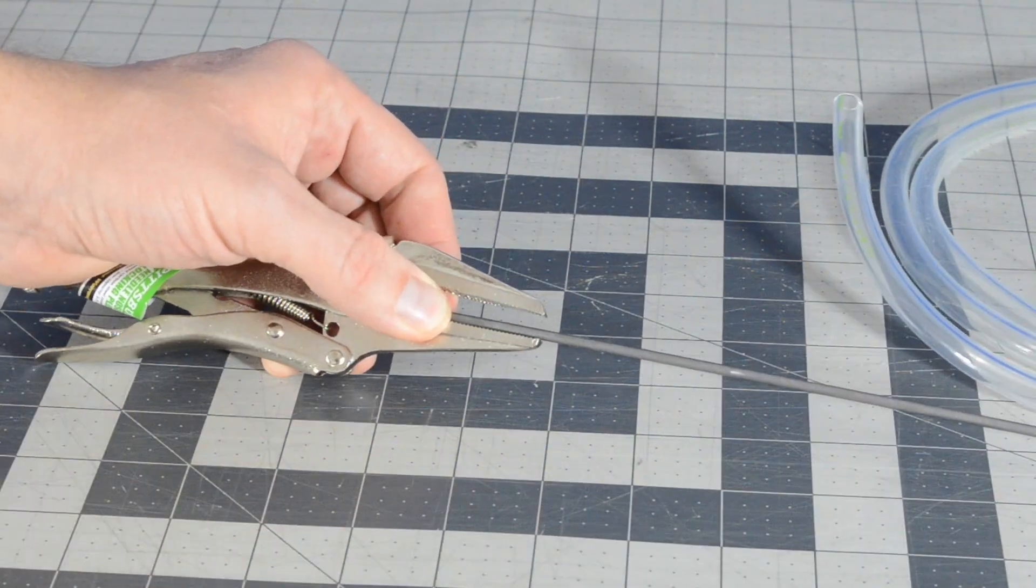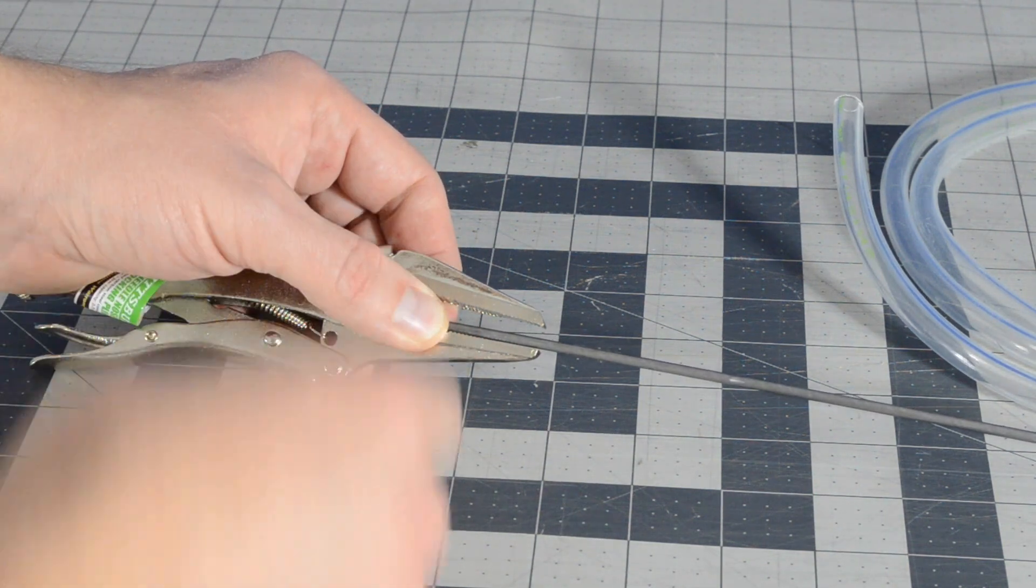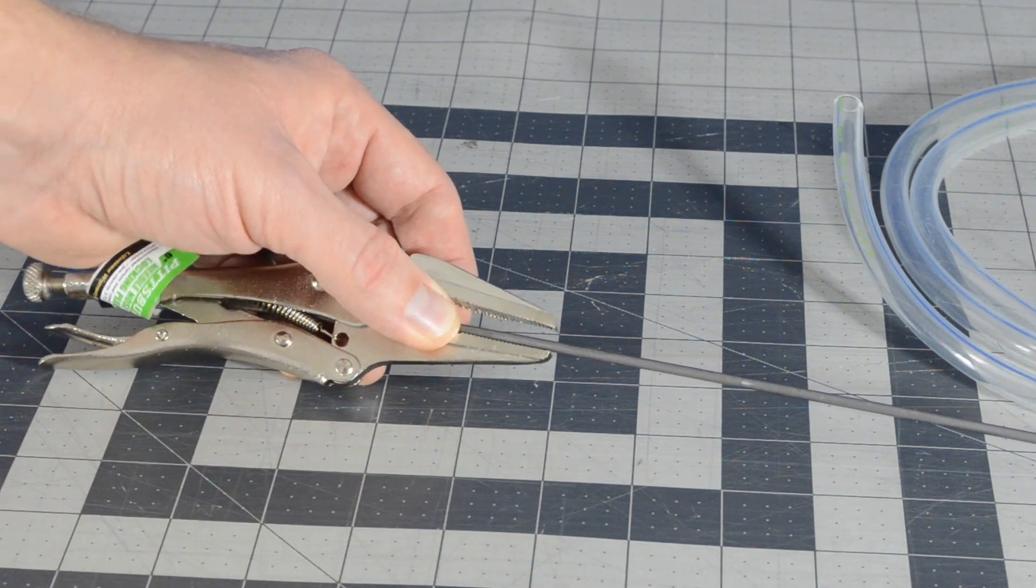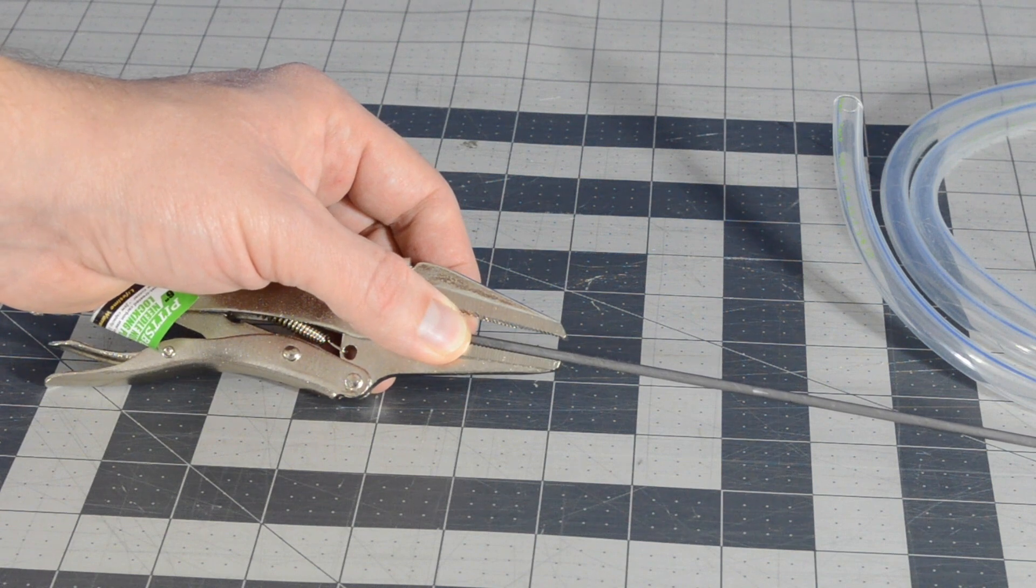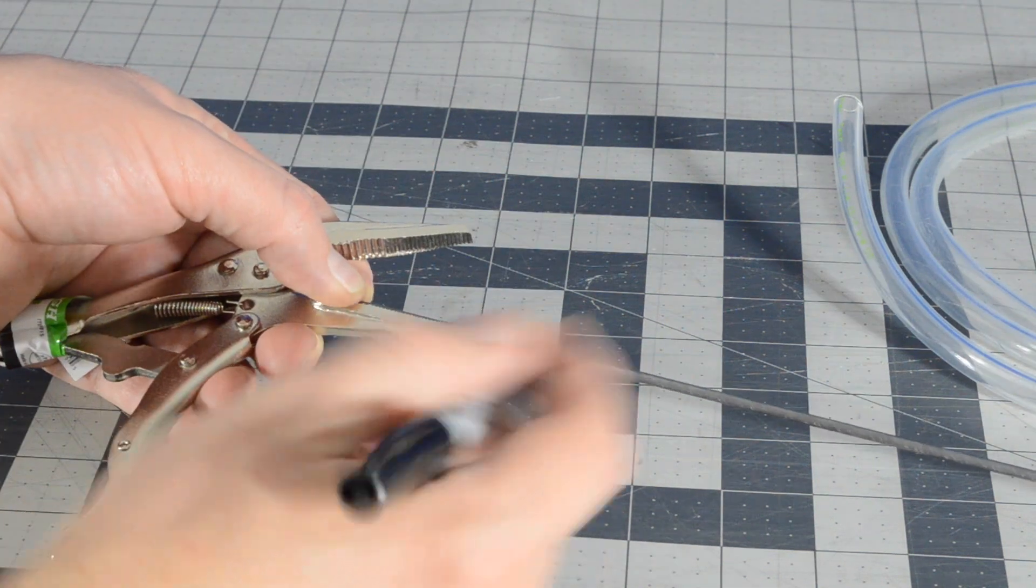I thought, by modifying these plier jaws with some 1/8 inch steel rods, I could quickly and easily clamp a hose with one hand, and I could release it just as easily. So I set to work.